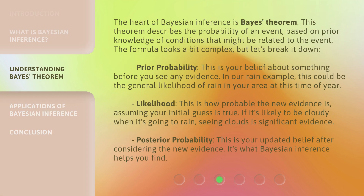The heart of Bayesian Inference is Bayes' theorem. This theorem describes the probability of an event, based on prior knowledge of conditions that might be related to the event. The formula looks a bit complex, but let's break it down.